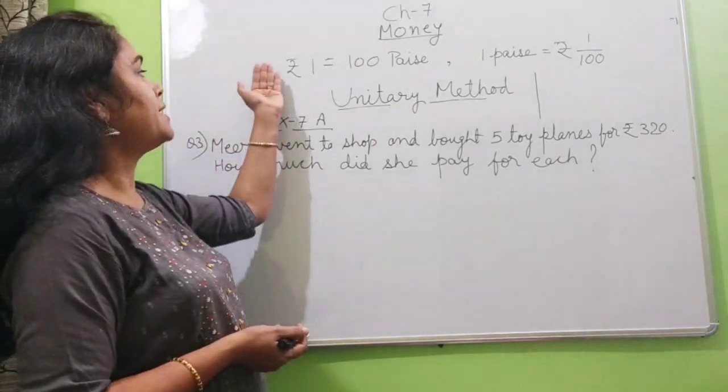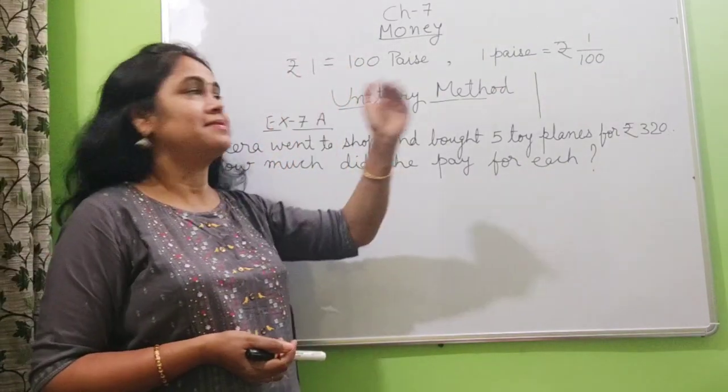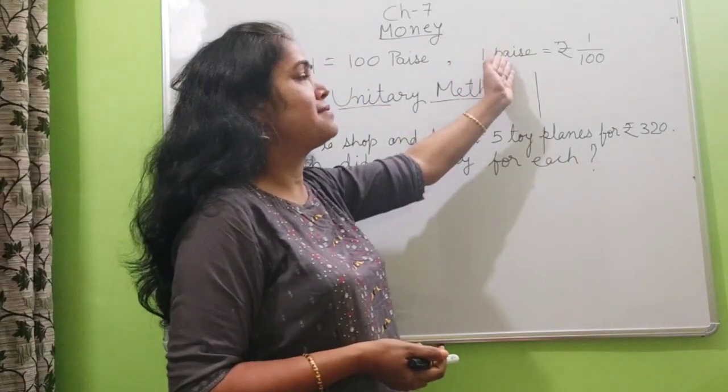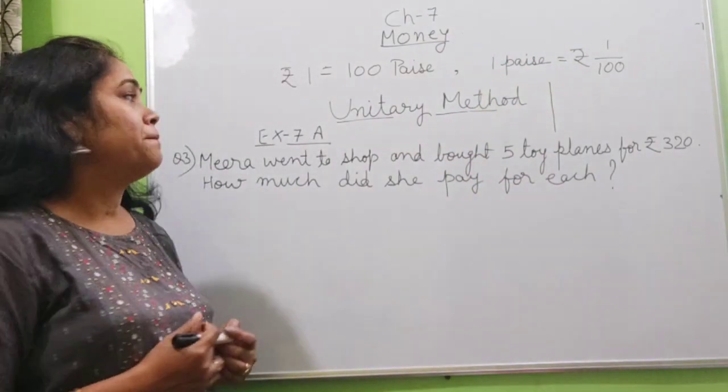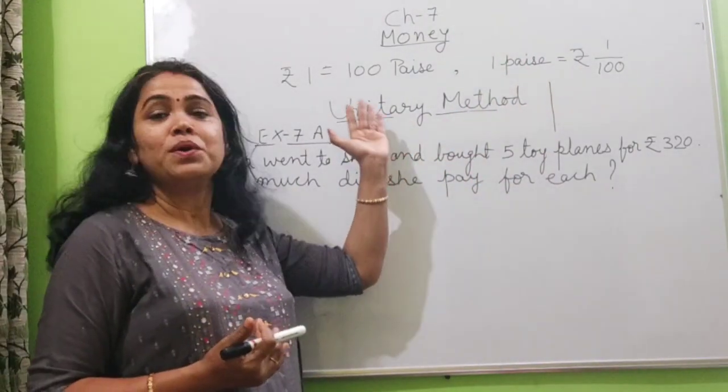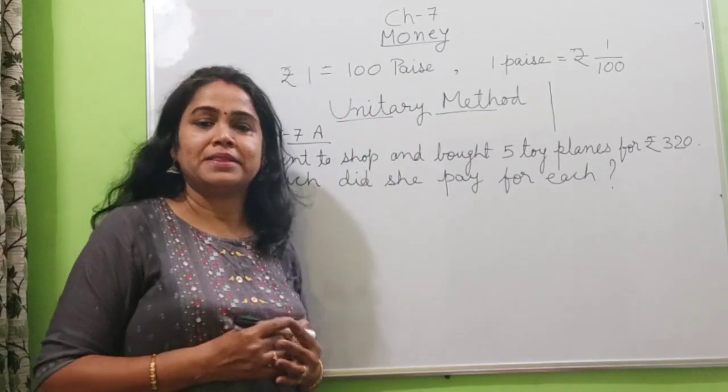In previous class you have studied that rupees 1 is equal to 100 paise, this conversion 1 paise is equal to rupees 1/100, all these things you have studied and many more questions you have done. But in this class I will explain you unitary method. What is the use of unitary method?